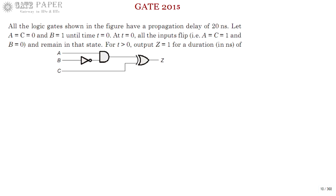Let A and C be 0 and B be equal to 1 until time t equals 0. That is, before t equals 0, A and C values are 0 and B value is 1. At t equals 0, all the inputs flip — they will get complemented: A and C will become 1, B will become 0, and remain in that state. For t greater than 0, output Z will be 1 for a duration of — that is what we are going to calculate.